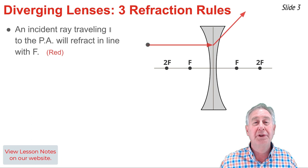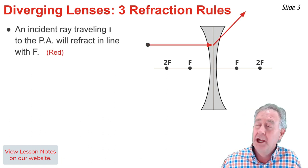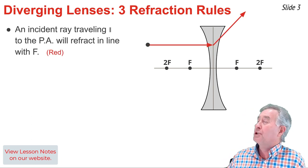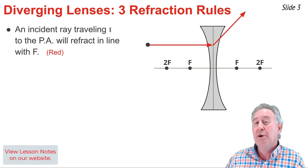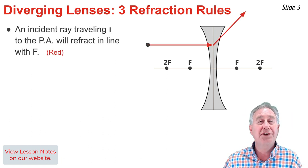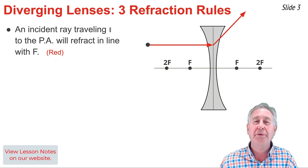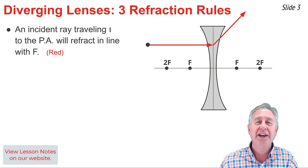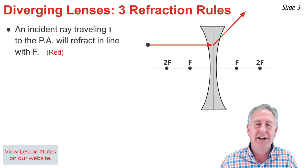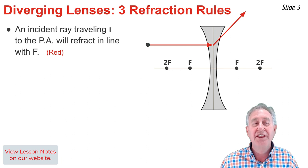The first rule is that a ray of light traveling parallel to the principal axis will refract in such a manner that the refracted ray is lined up with the focal point on the object side of the lens.